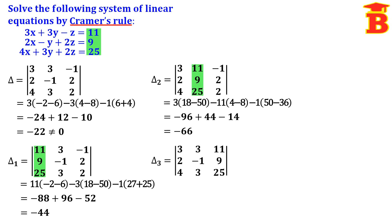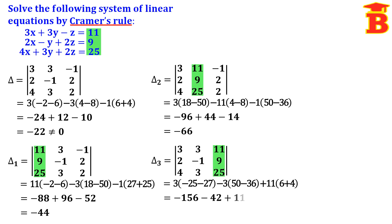Next find del 3. Del 3 means replace the third column by the constants 11, 9, 25, keeping the first column 3, 2, 4 and second column 3, minus 1, 3 the same. Expanding: 3 into minus 52 is minus 156; minus 3 into 14 is minus 42; plus 11 into 10 is 110. Adding these gives del 3 equals minus 88.